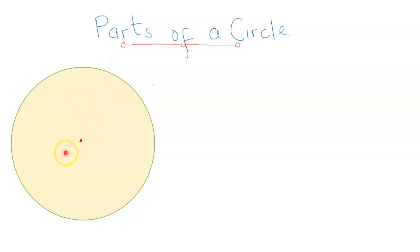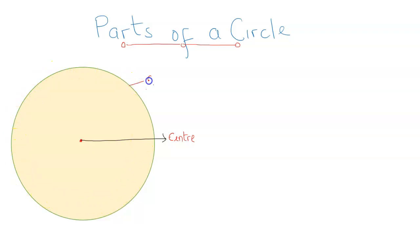The first part we are going to be talking about is the center. This point right here is called the center of the circle. Now we can see the boundary of the circle, and it's called the circumference — it's also the perimeter of the circle.